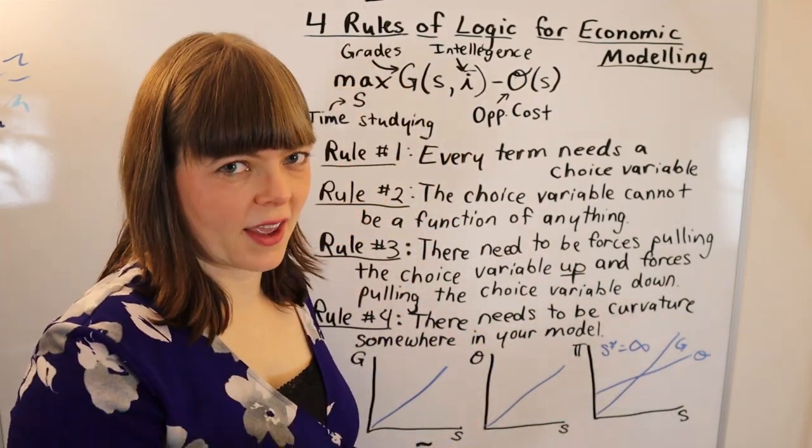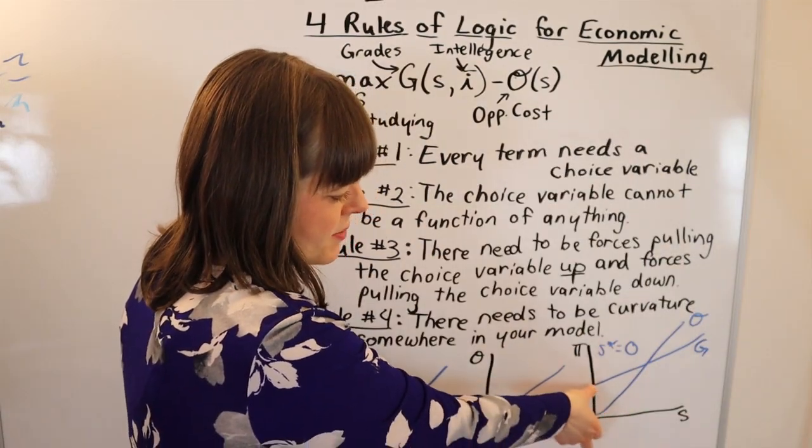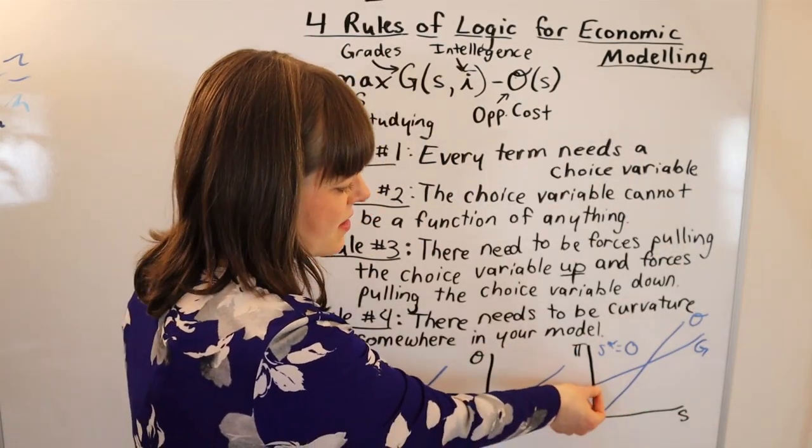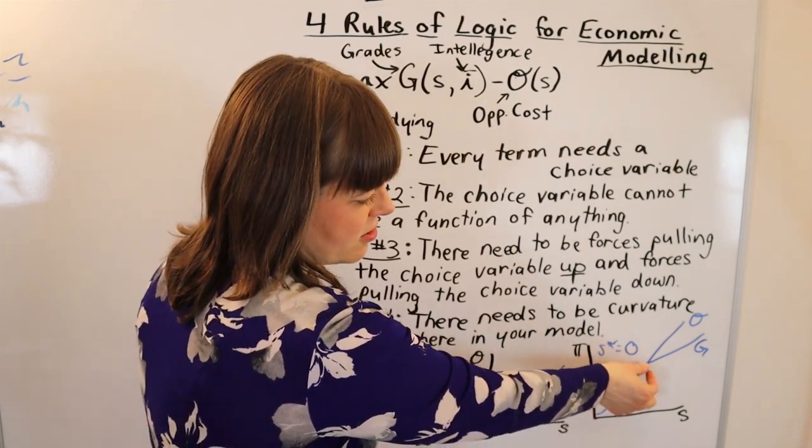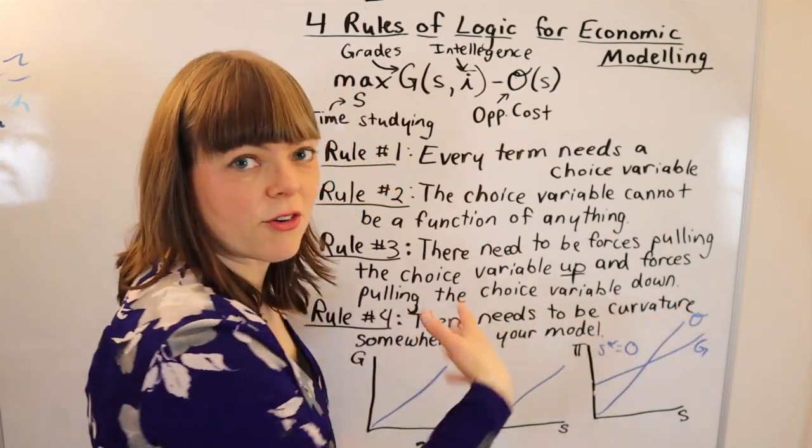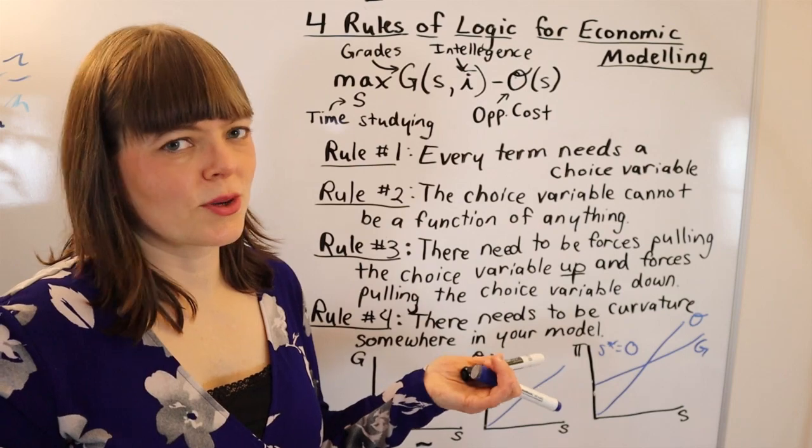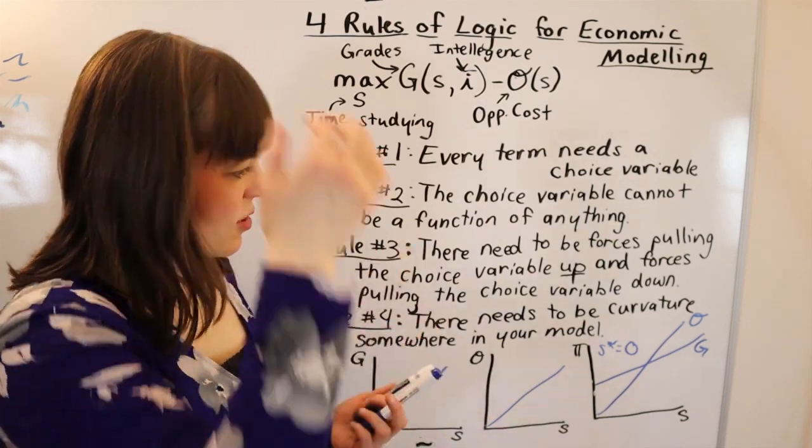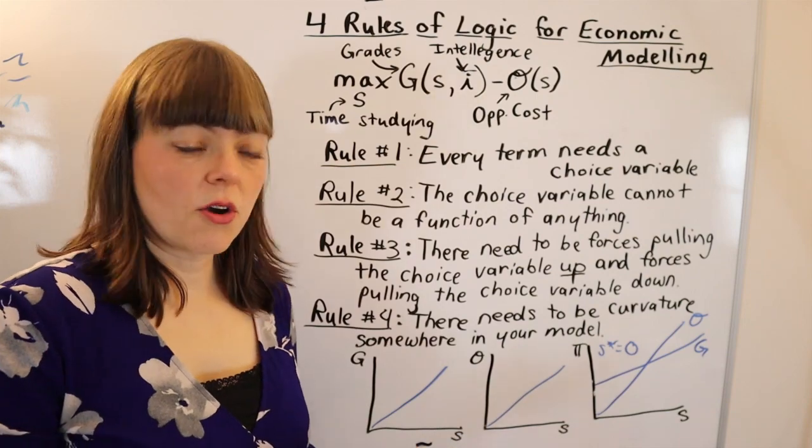Let me draw the other case. If these are your graphs, the optimal choice is going to be S equals zero because grades minus opportunity cost is really big here and it gets smaller and smaller until it reaches here, and then it's negative everywhere after that. So we don't want a model where the optimal choice is zero or infinite. The way to fix this is to add curvature to one or the other.